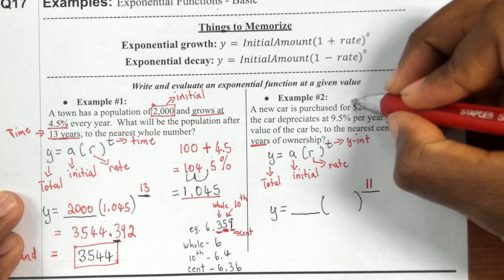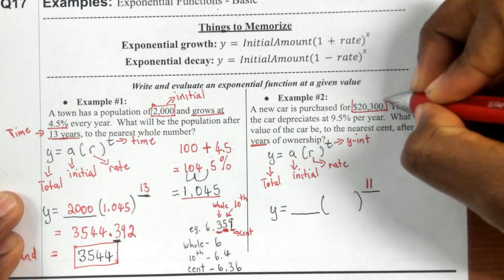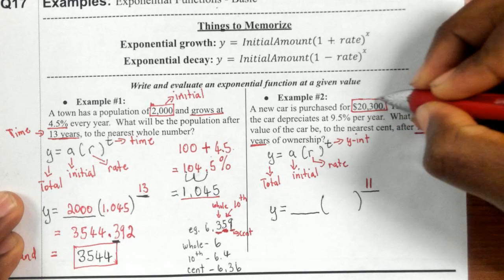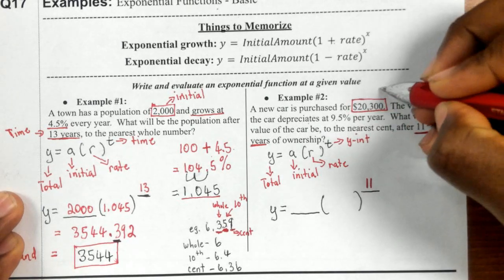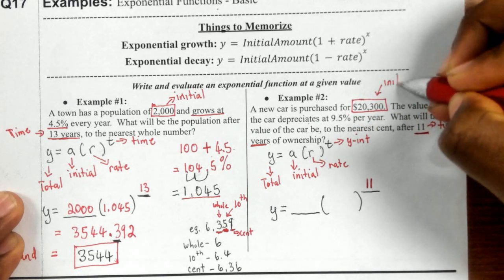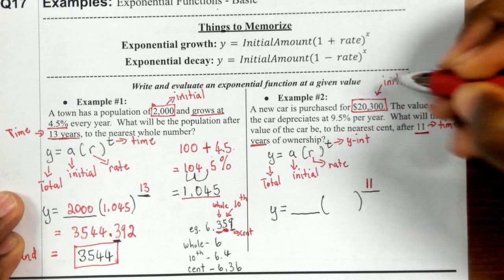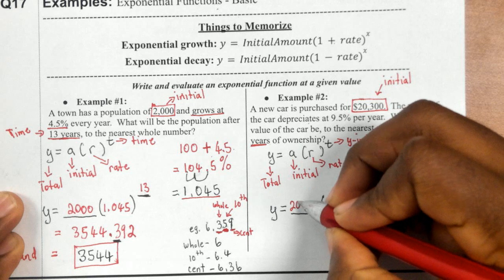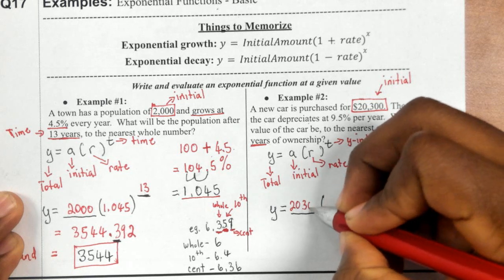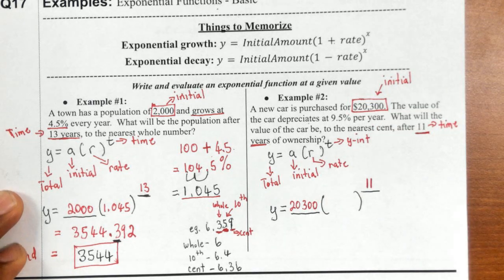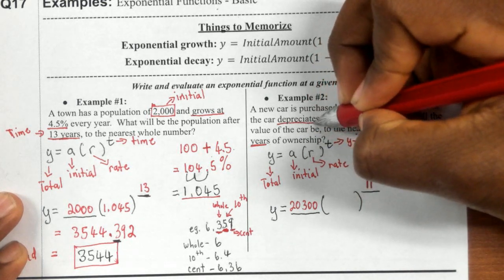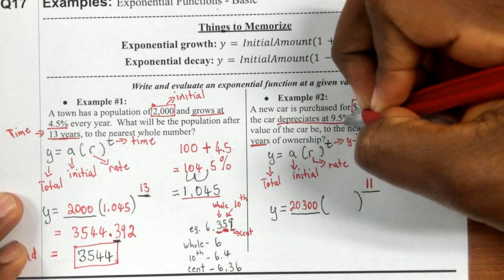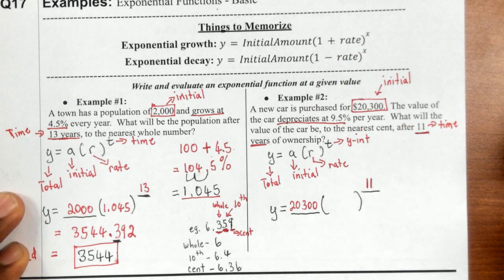Your initial is the $20,300, because that's the amount you bought the car for before it started to depreciate. That's the initial or starting cost. Now we're going to calculate our rate. The car depreciates at 9.5%.